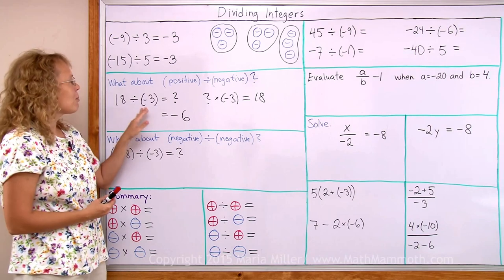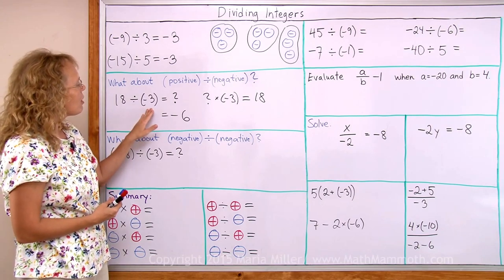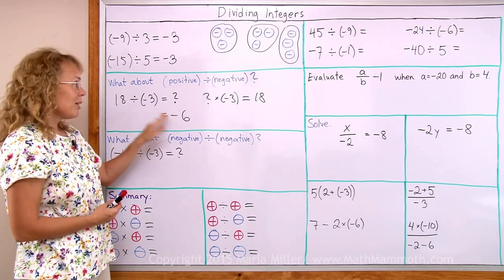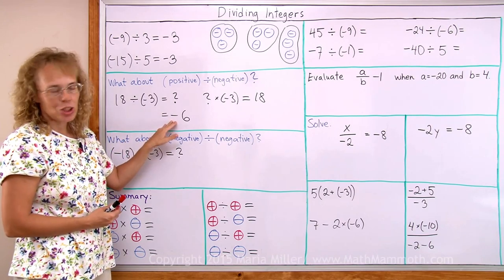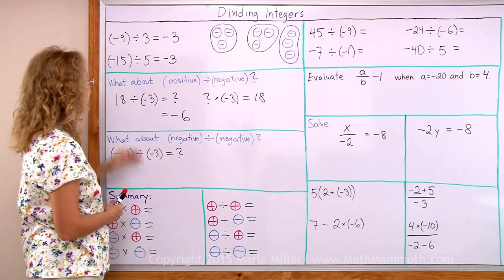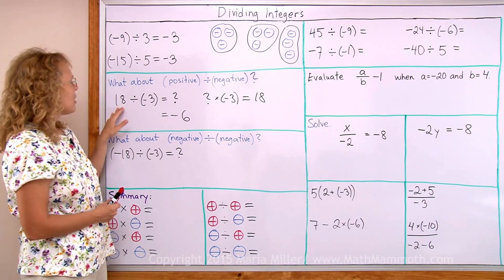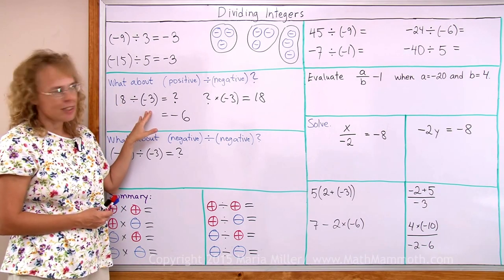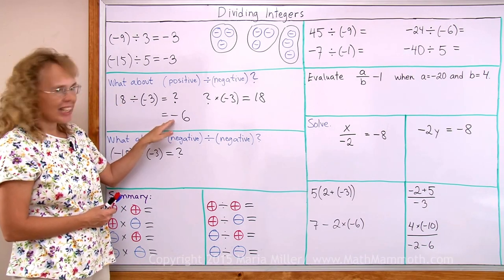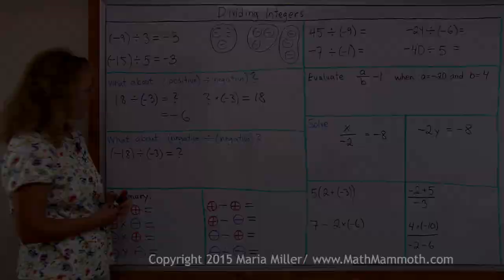For example, 24 divided by negative 4 would be negative 6, or 20 divided by negative 10 would give negative 2.